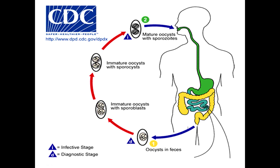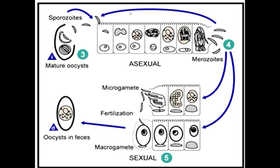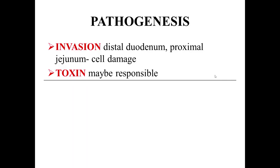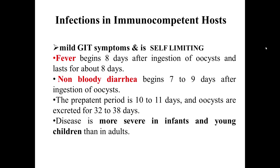In more detail: sporulated oocysts are ingested, enter the intestine, and undergo asexual then sexual reproduction through macro and micro gametes; fertilization occurs and oocysts are released — initially non-infective and later becoming infective. Pathogenesis is caused by invasion of the organisms into the distal duodenum and proximal jejunum, causing cell damage, and they may also produce a toxin responsible for pathogenesis. In immunocompetent hosts, mild GIT symptoms occur and it is usually self-limiting. Fever begins 8 days after ingestion and can last up to 8 days. Non-bloody diarrhea is seen within a week of ingestion.